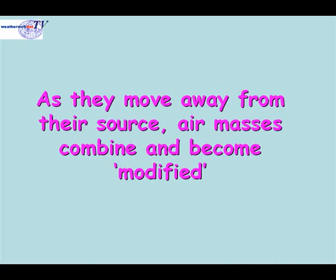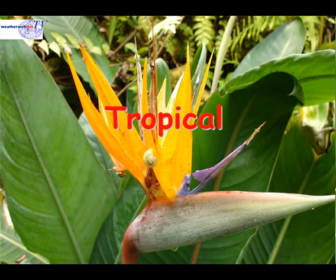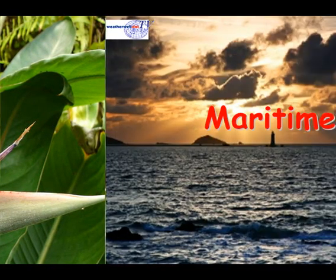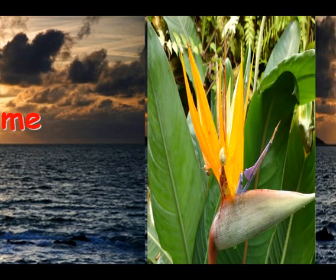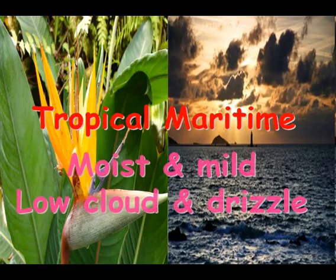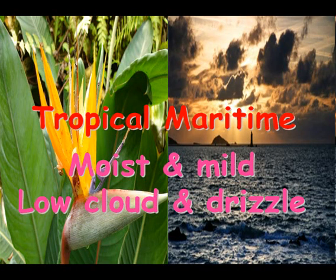Each of these air masses will move away from their source region — those areas of high pressure — and the air masses will become combined and modified. It's this modification process that really is the key to understanding air masses, because each air mass has its own particular type of weather. For example, if air leaves the tropics and then crosses over a sea, the air will become what we know as tropical maritime. Tropical maritime air brings moist, cloud-laden air; it's very mild and also brings low cloud and drizzle to the coasts of the British Isles and Europe.